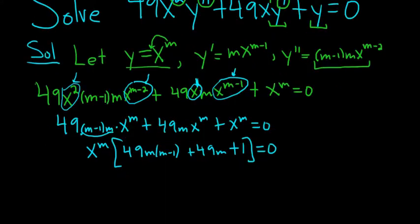So at this point, you can simply divide by x to the m. So I'm going to divide both sides by x to the m, x to the m. So these cancel.